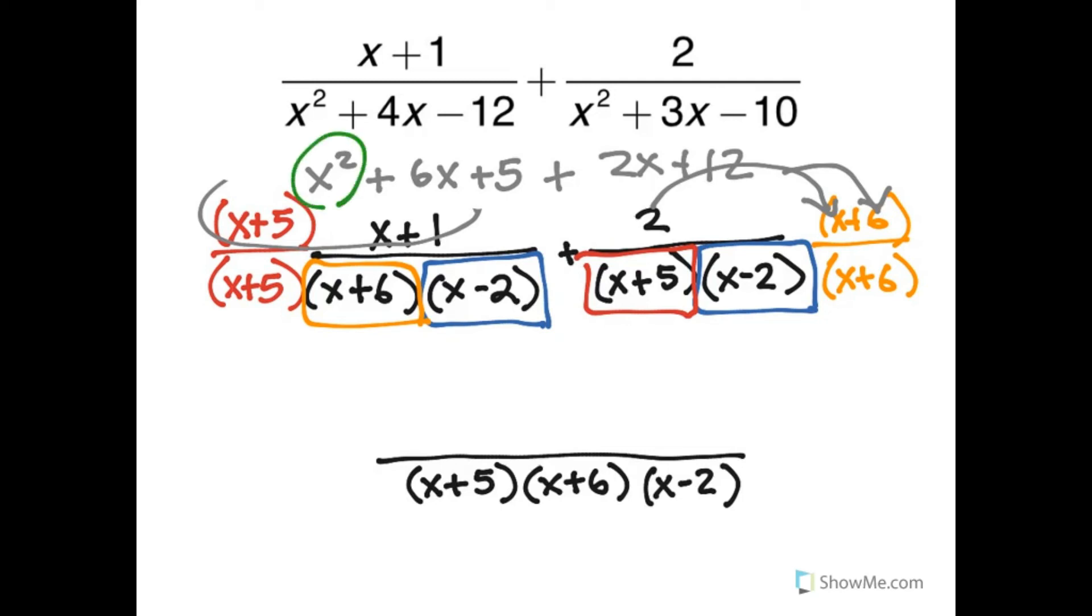There's only 1 x squared. There's a 6x and a 2x. That's 8x. And there's a 5 and a 12. That's 17.